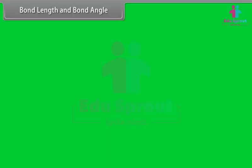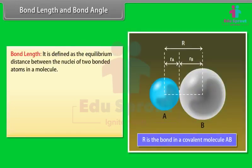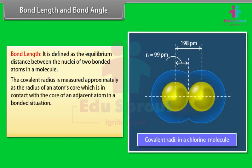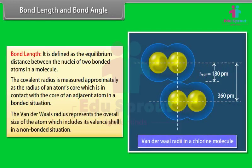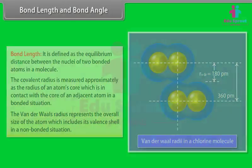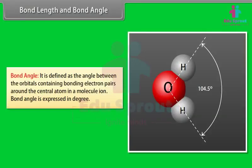Bond length is defined as the equilibrium distance between the nuclei of two bonded atoms in a molecule. The covalent radius is approximately the radius of an atom's core in contact with the core of an adjacent bonded atom. The Van der Waals radius represents the overall size of the atom including its valency shell in a non-bonded situation. Bond angle is defined as the angle between the orbitals containing bonding electron pairs around the central atom in a molecule or ion, expressed in degrees.